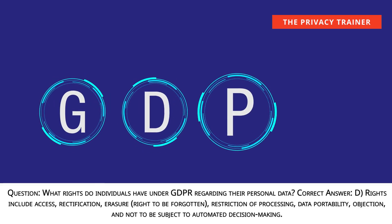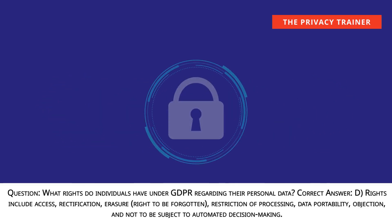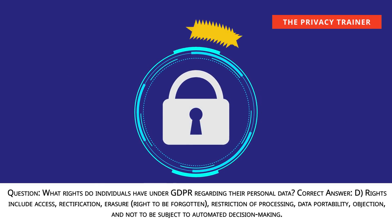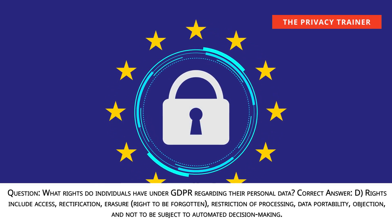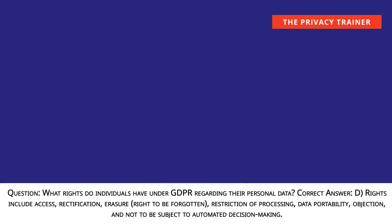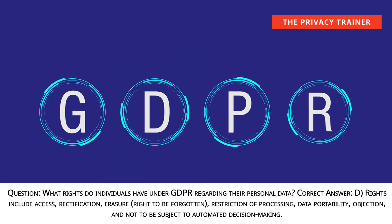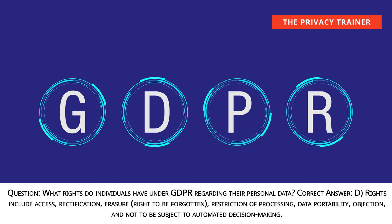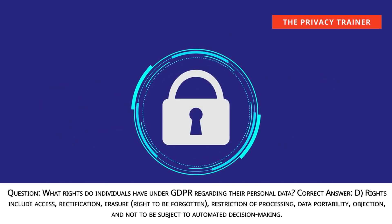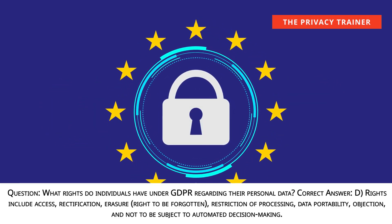Question: What rights do individuals have under GDPR regarding their personal data? Answer D: Rights include access, rectification, erasure (right to be forgotten), restriction of processing, data portability, objection, and not to be subject to automated decision-making.